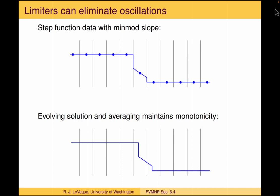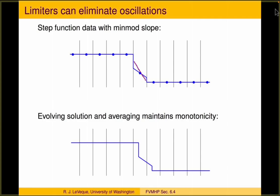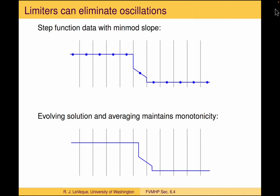But if we look at this, it seems like in this plot we could probably make a larger slope here — we could probably even double this slope, to the point where it hits the lower limit, and we would still have a TVD method that gives us a monotone-preserving method. So near a discontinuity, the min-mod slope is sometimes a little too restrictive.